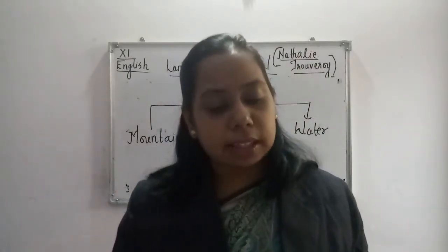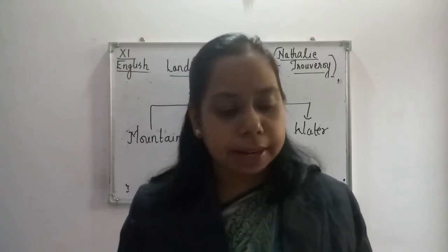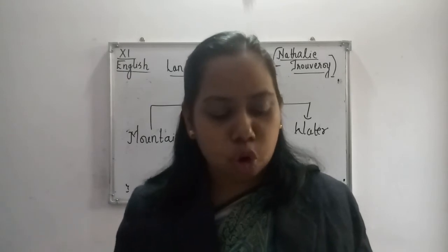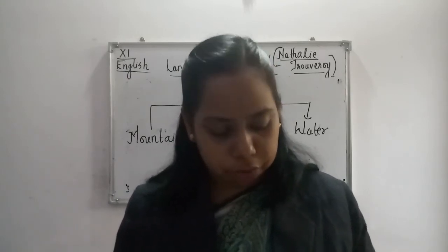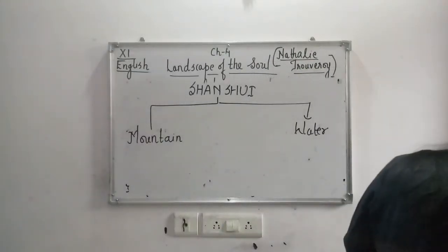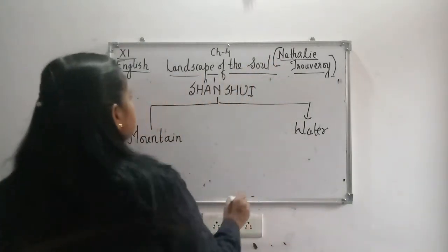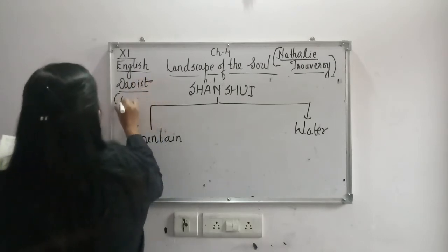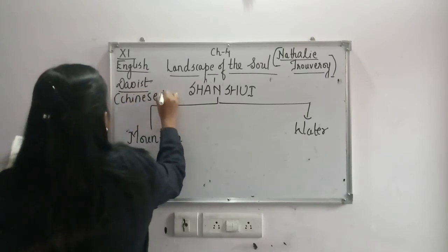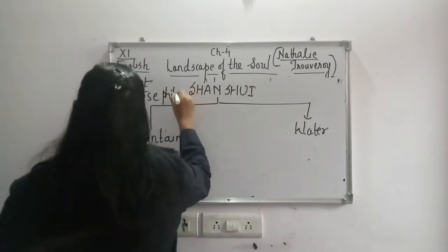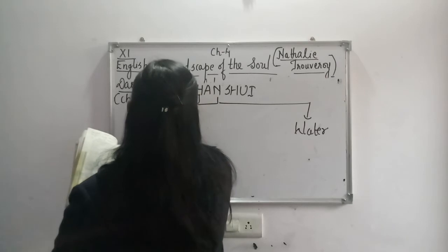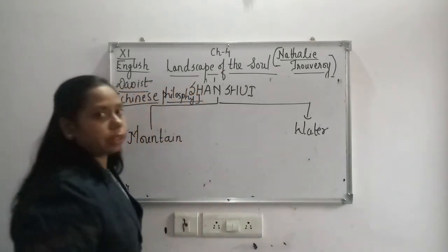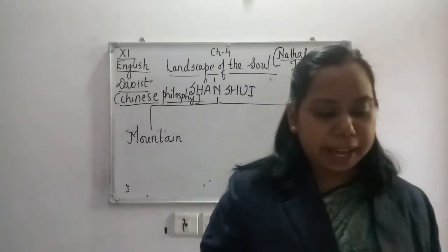Shan Shui, literally 'mountain water,' is used together to represent the word landscape. These represent two complementary poles reflecting the Taoist or Daoist view of the universe. The mountain is Yang — the male version — while water is Yin — the female version.